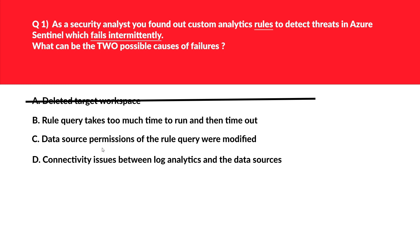Let's now look at option C: data source permissions of the rule query were modified. Once a permission is removed, the permission won't be restored automatically. Permission needs to be granted explicitly by some kind of human intervention. Therefore seems incorrect, we'll reject this. And the last option left by the process of elimination is connectivity issues between Log Analytics and the data sources.